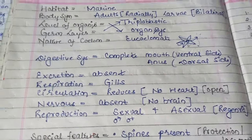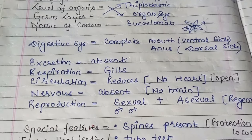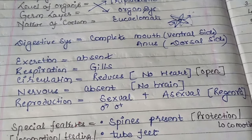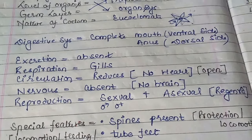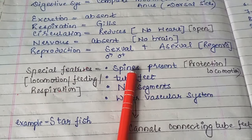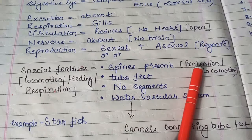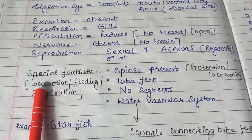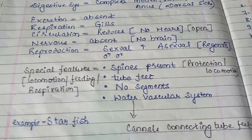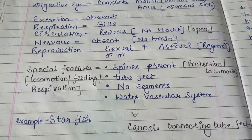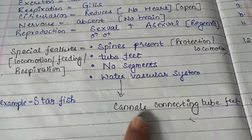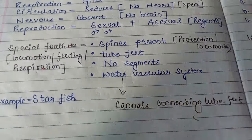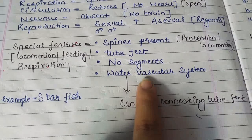Nervous system: absent — no brain is present, which is why they are also called brainless organisms. Reproduction: both sexual and asexual. Asexual is generally done by regeneration process, and sexual is by gametic fusion. Special features: spines are present on the body for protection and locomotion. Another organ found is tube feet, which help in locomotion, feeding, and respiration. No segments are found in their body, and a water vascular system is present — a network of canals connected to tube feet that transfers food particles and oxygen into the body.